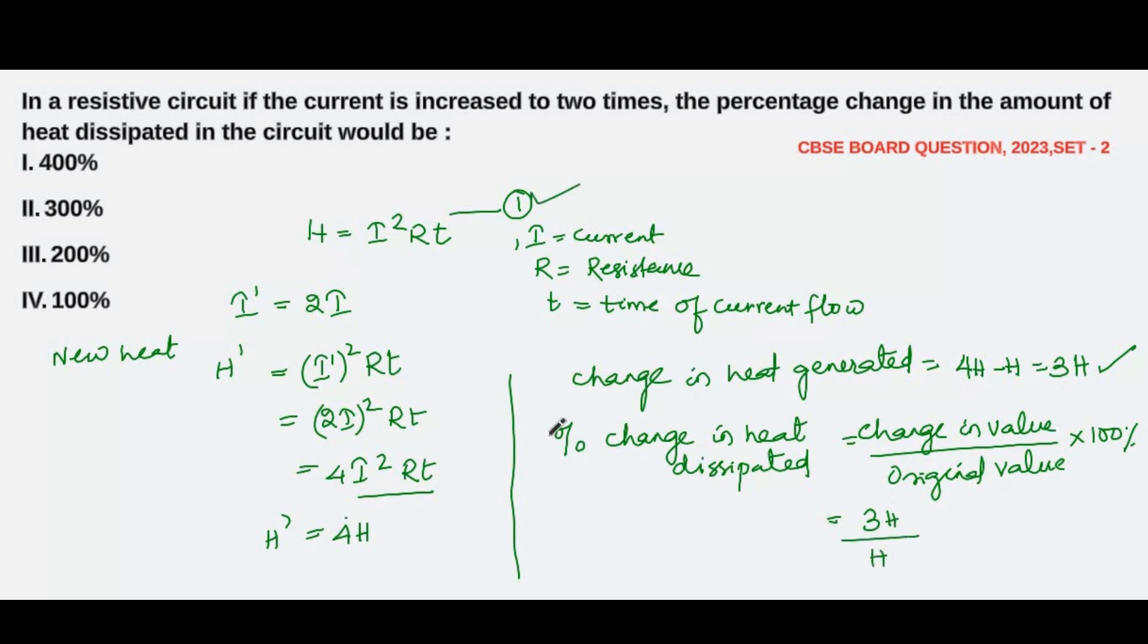H cancels: 3 times 100% = 300%. So this is your answer—the percentage change in the amount of heat dissipated in the circuit would be 300%. I hope you are clear.